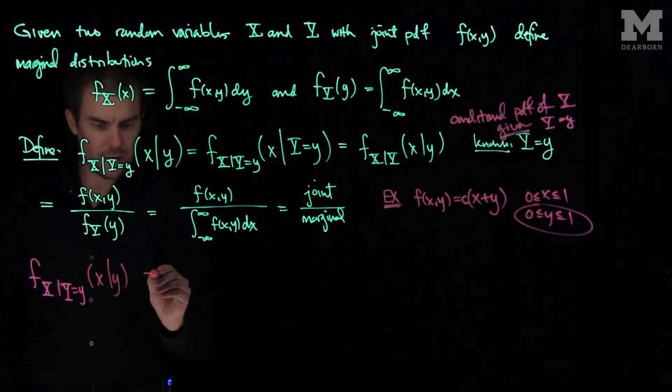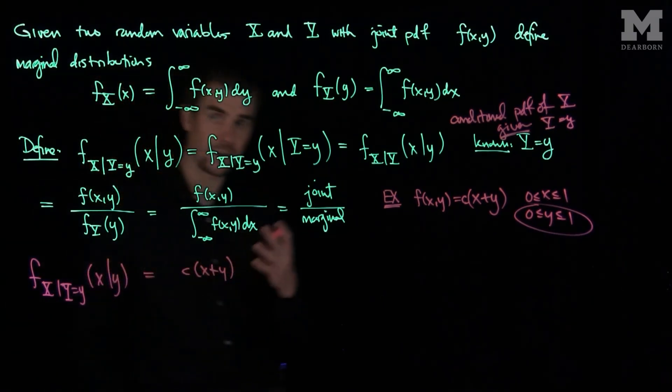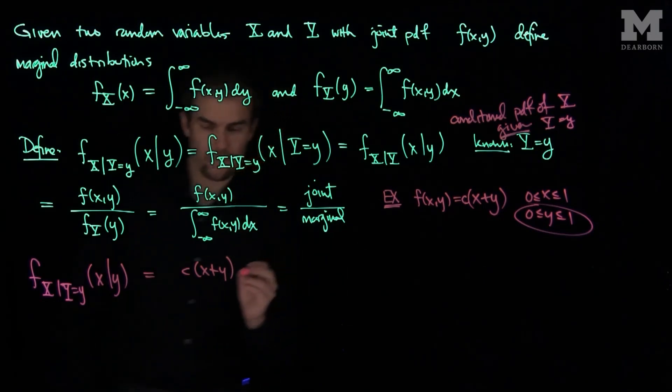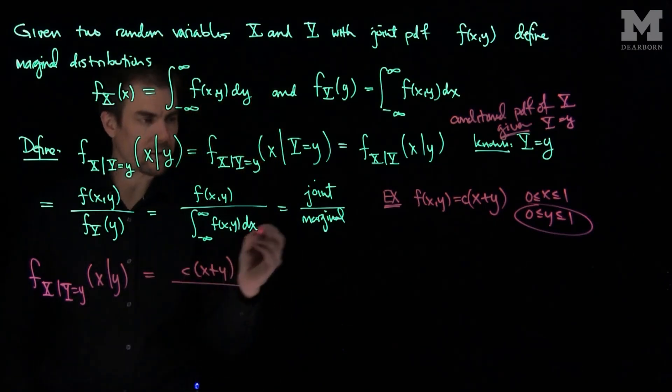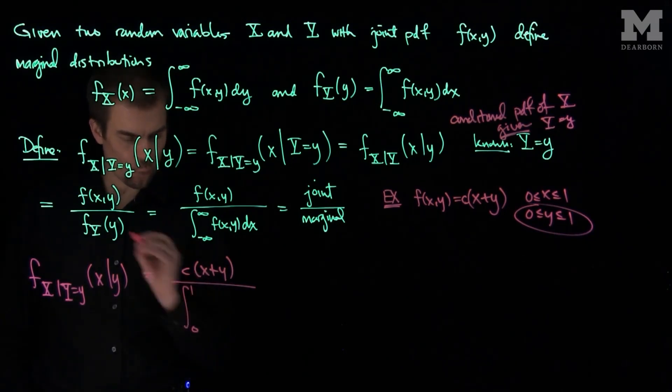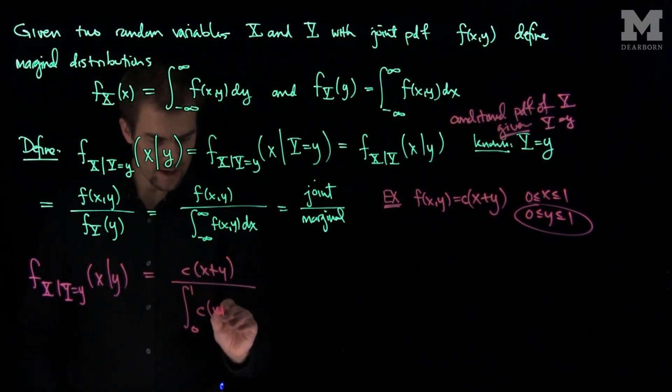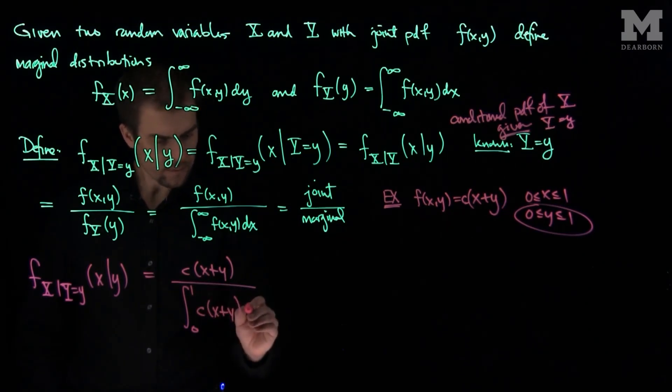it's going to be the joint pdf, which is going to be c(x+y). That's my joint pdf, so that's the easy part of these problems, putting the joint pdf on top. Over, I have to integrate over all the possible values of x. So x goes between 0 and 1. Those are all the possible values of x. c times (x+y) dx.